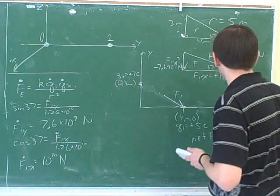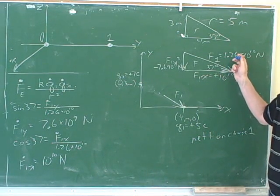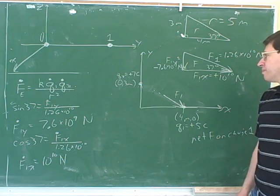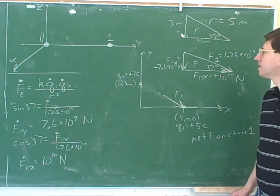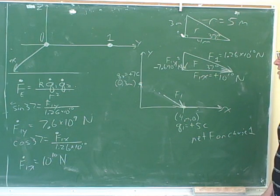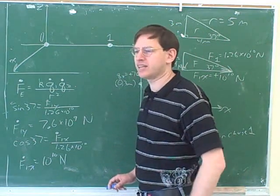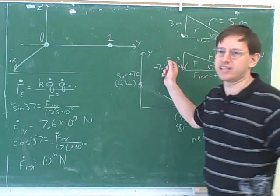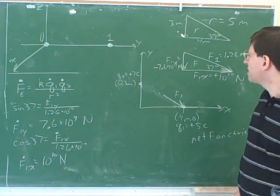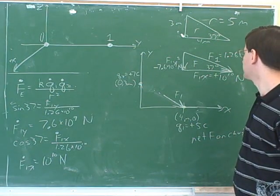It looks like we've done the last step — we've broken this overall force into components. To really break it into components, you need to know both the magnitude and the signs. Going back, we already figured out the signs: the Y component is negative 7.6 times 10 to the 9th newtons, and the X component is positive 1 times 10 to the 10th newtons. If we hadn't done the signs first, after all this work it would be easy to forget them. The key thing is to put in the signs first, which comes from putting the arrows in. There are other ways to break vectors into components, but this is the best approach.